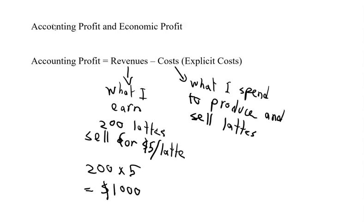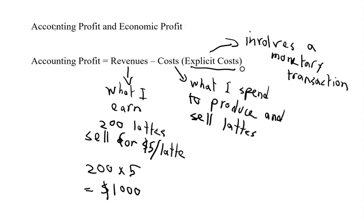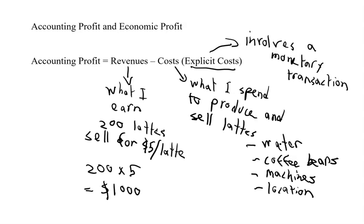Now what do I spend? Which is what I'm saying is explicit cost. This basically means it involves a monetary transaction. So what do I need to produce lattes? Some of the costs that I may face are things like water, coffee beans, maybe some kind of latte making machine like frother and coffee grinders. So I need machines, I need a location, I need utilities, and many other things. Those are all my explicit costs because I have to spend money to get all these things.